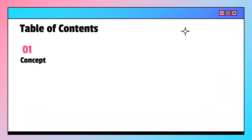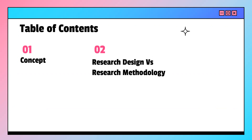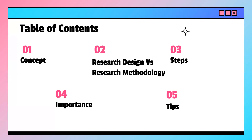Let me take you to the roadmap of my presentation. First, I will be dealing with the concept of research methodology. Second, I will differentiate between research design and research methodology. Third, I will be explaining the different steps necessary for writing a research methodology. Fourth, I will talk about the importance. And fifth, I will give you certain tips for writing the research methodology section.